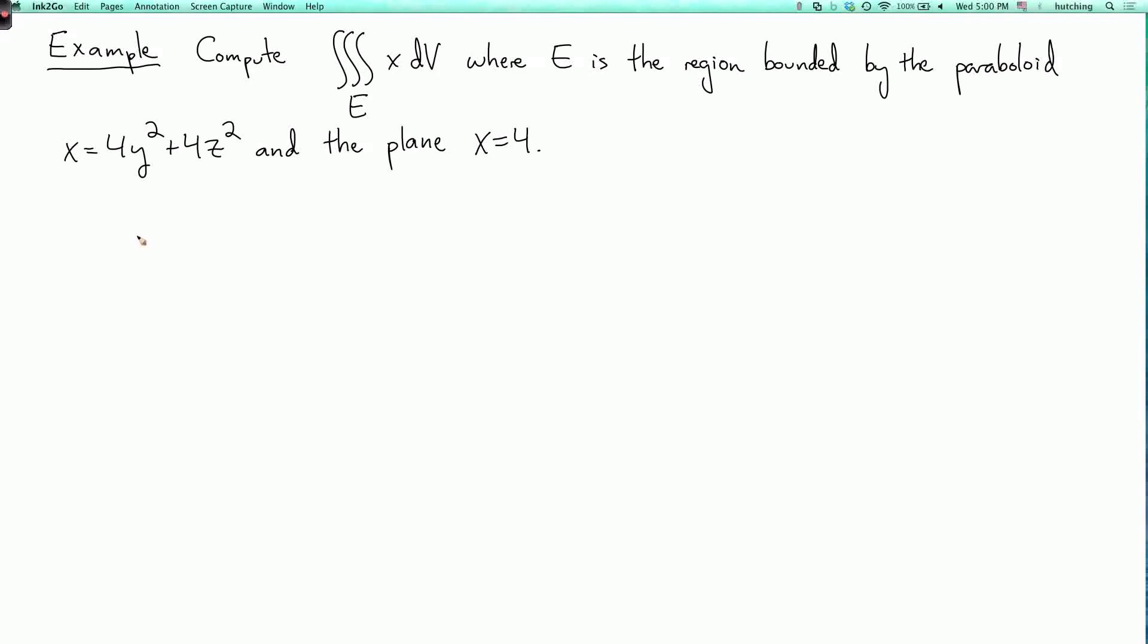We're now going to do an example of a triple integral. So we're going to calculate the triple integral over E of x with respect to volume, where E is the region bounded by the paraboloid x equals 4y squared plus 4z squared, and the plane x equals 4.